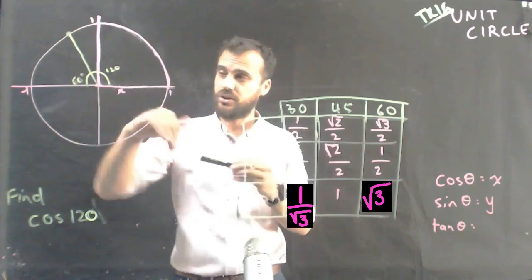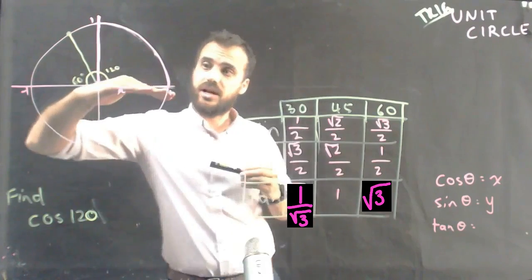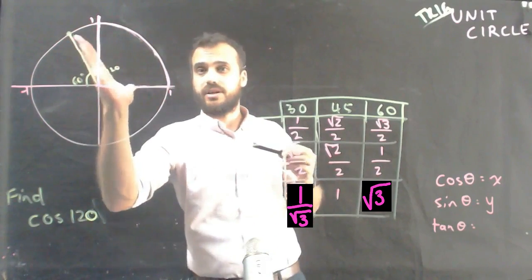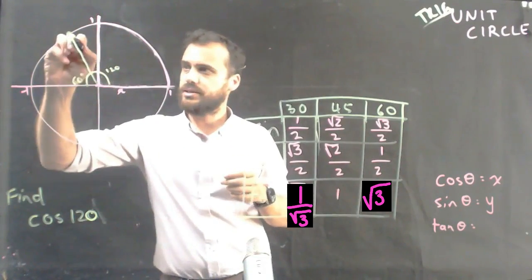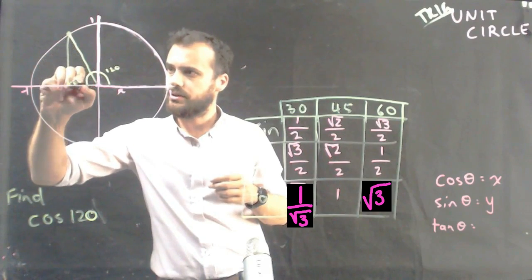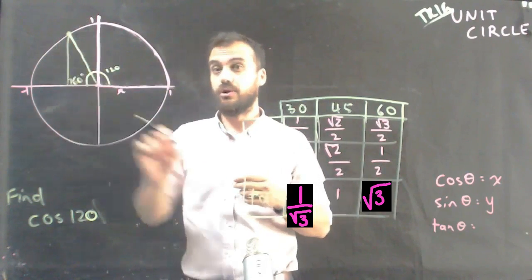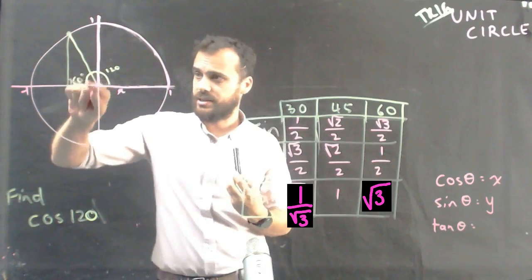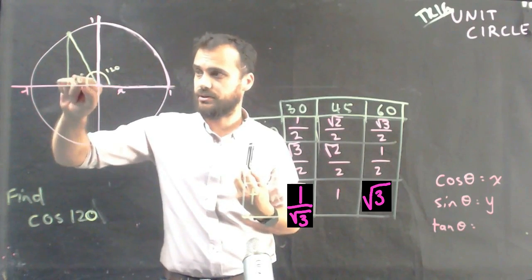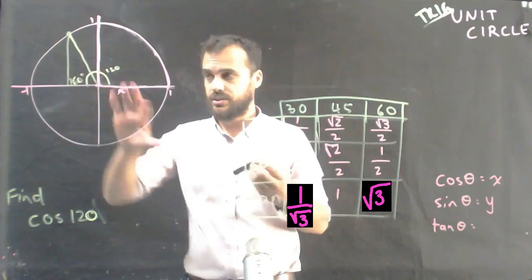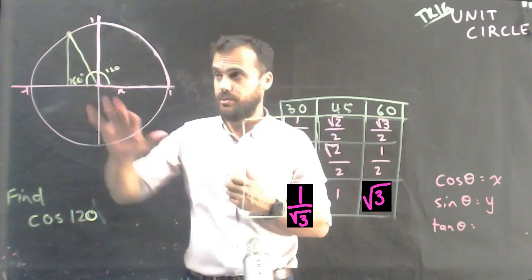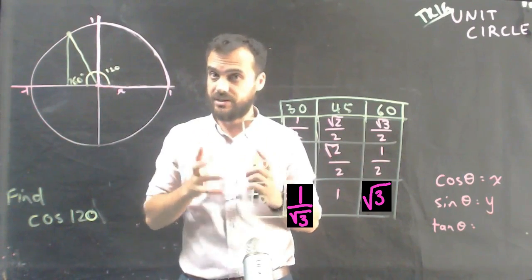Step one, if we want to find this unit circle, draw it in, starting from here and rotating around. It shouldn't be hard to see that I can go down here and draw myself a right angle triangle with a 60 degree angle in here. That's sort of our second step here. We've got a right angle triangle. That's excellent.